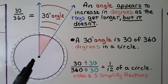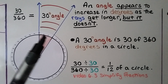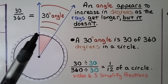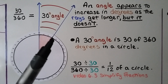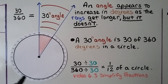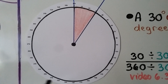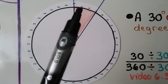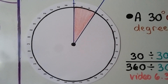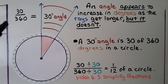Here we have a 30 degree angle — this measures 30 degrees. We count 10, 20, 30, and going all the way around it goes to 360. We can see all the degrees going around the edge of this circle. This is a 30 degree angle: it's 30 out of 360 degrees, it's 30/360ths.